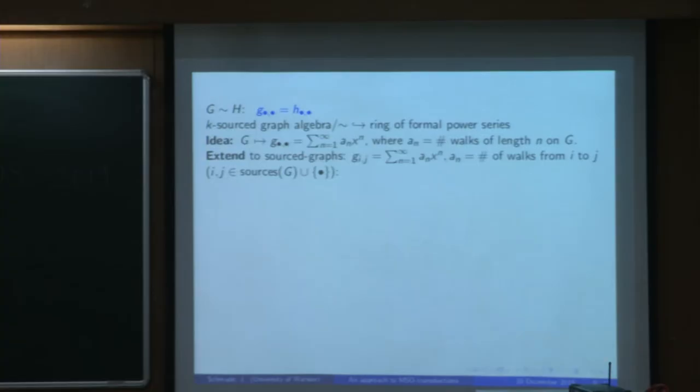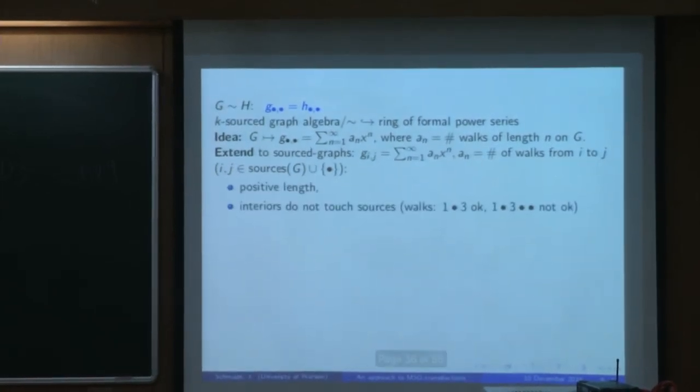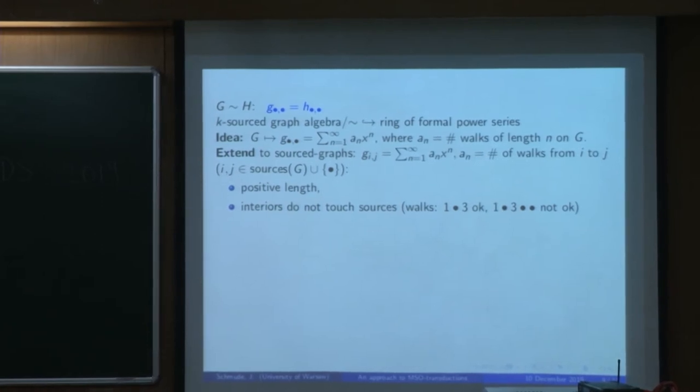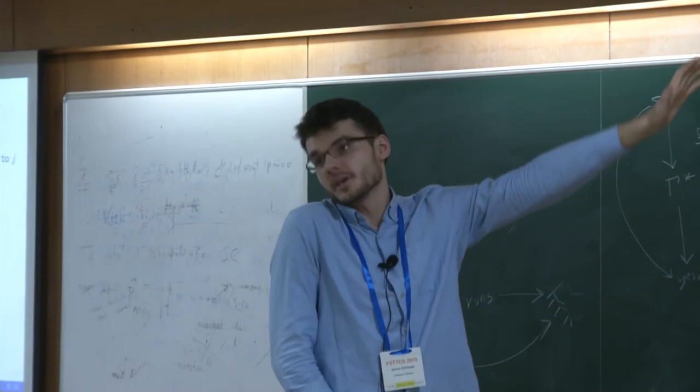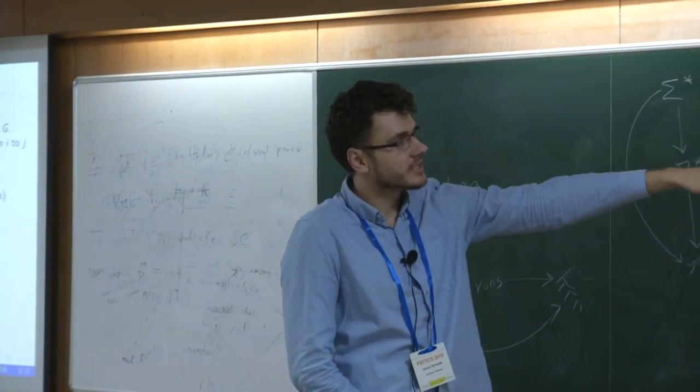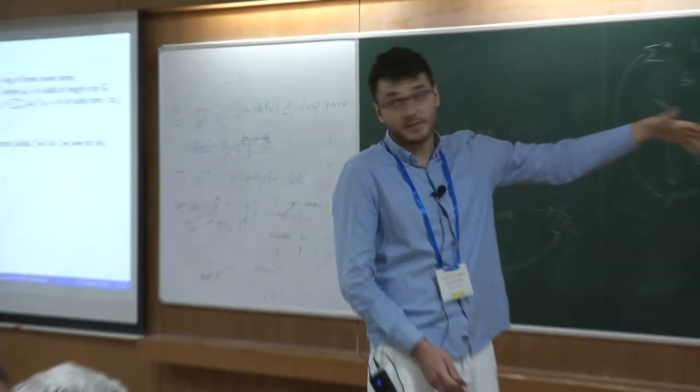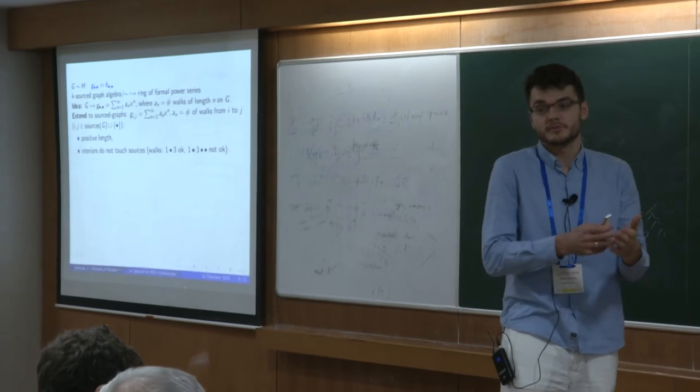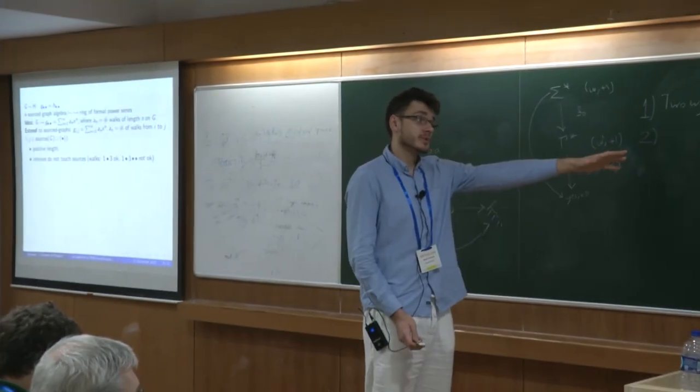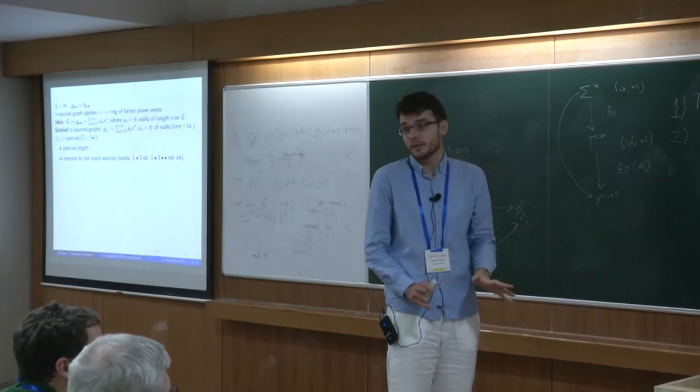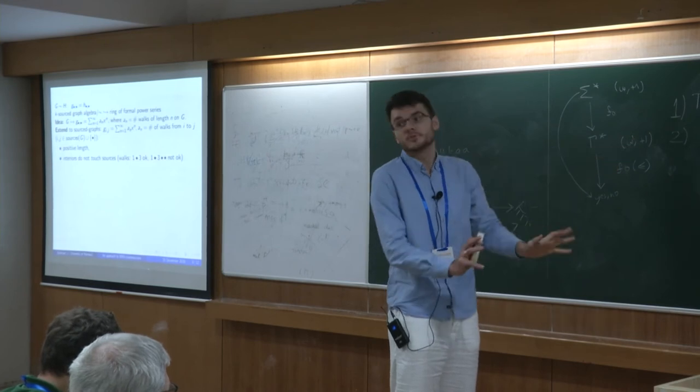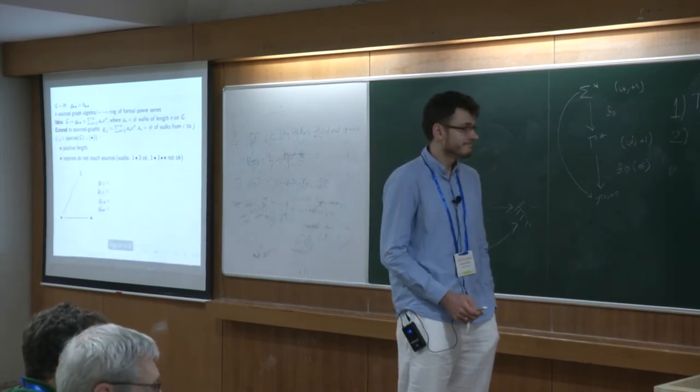We have to extend it to source graphs somehow. The idea is as follows. We'll use some of the names. Let G_ij, where i and j are sources, be a formal power series like very similar to this one, but it counts walks from i to j that have positive length. We don't count trivial walks. And what is important is that interiors do not touch sources. So a walk that starts at 1, then visits some unnamed vertices and ends in 3 is okay. But if you ever visit a 3, you have to end the walk.